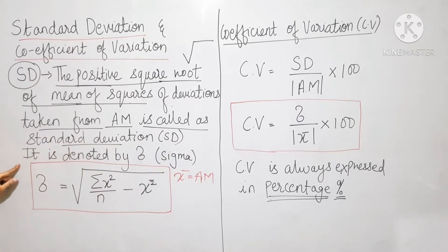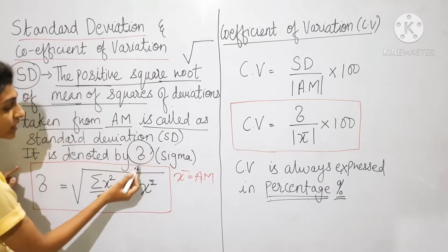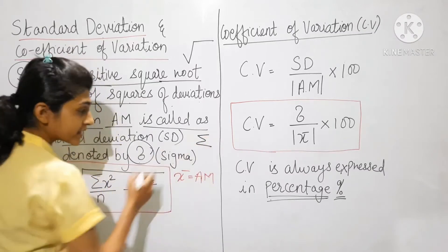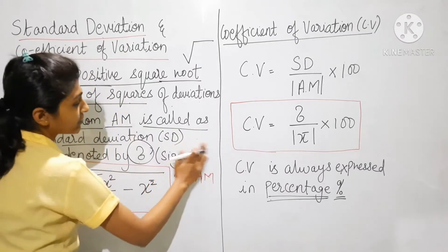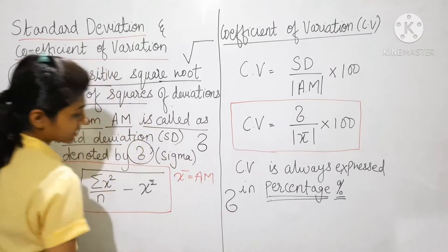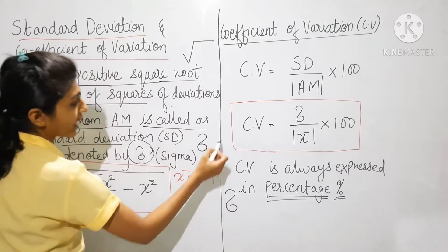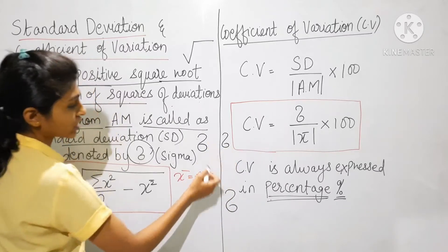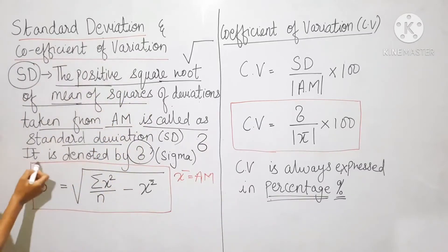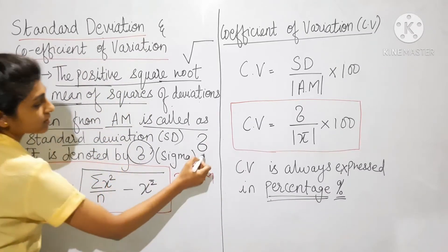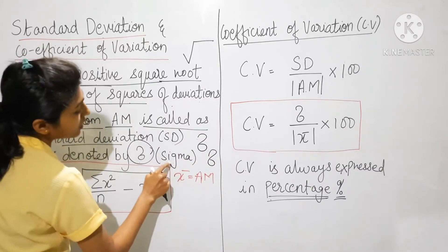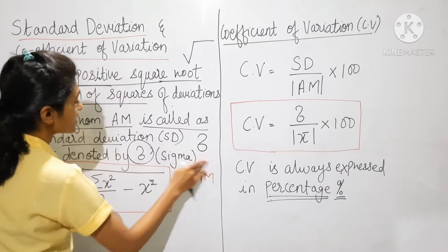Standard deviation is denoted by this sign, which is called sigma. So, this sign also represents sigma. In standard deviation, sigma means this sign — it is denoted as SD. In short, if you write SD, it represents sigma.